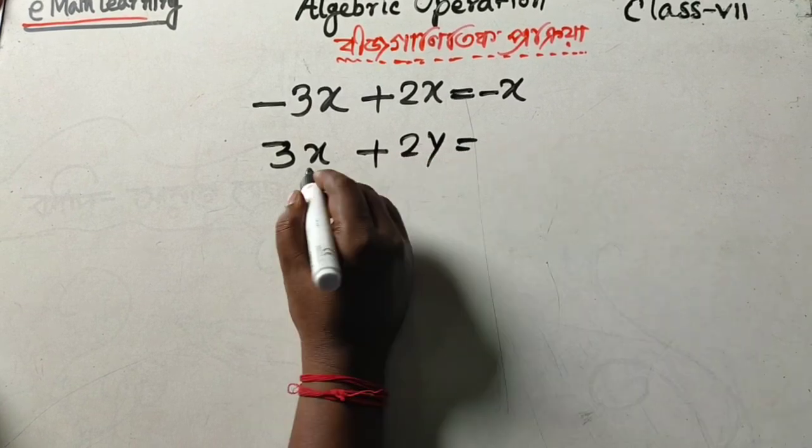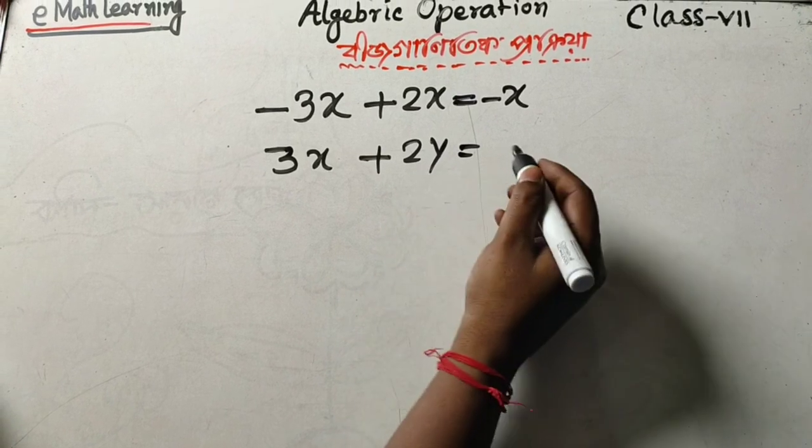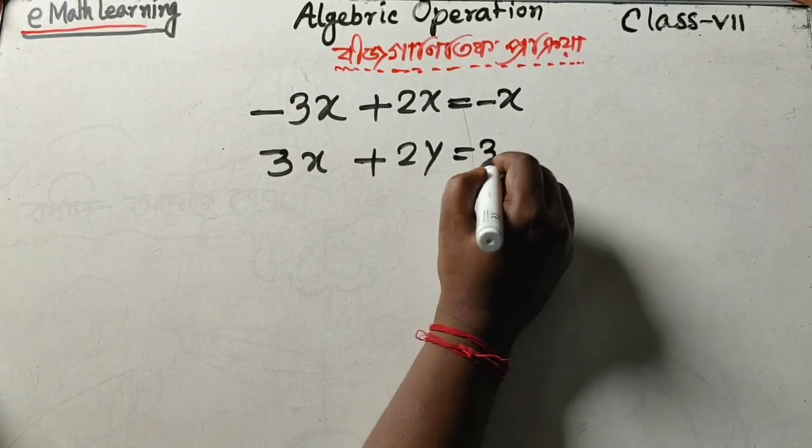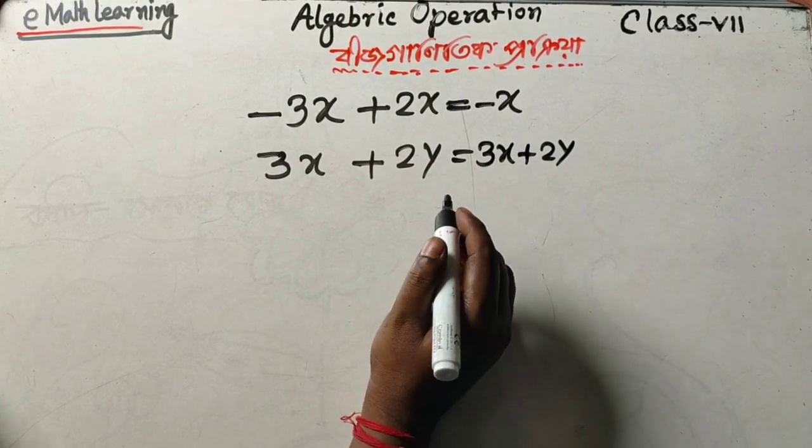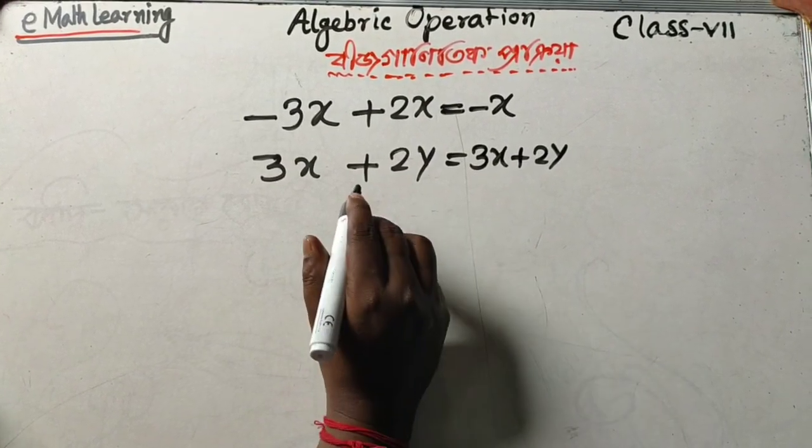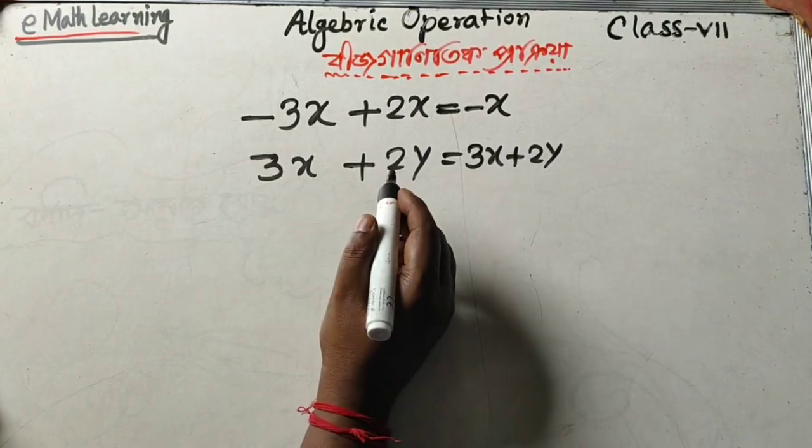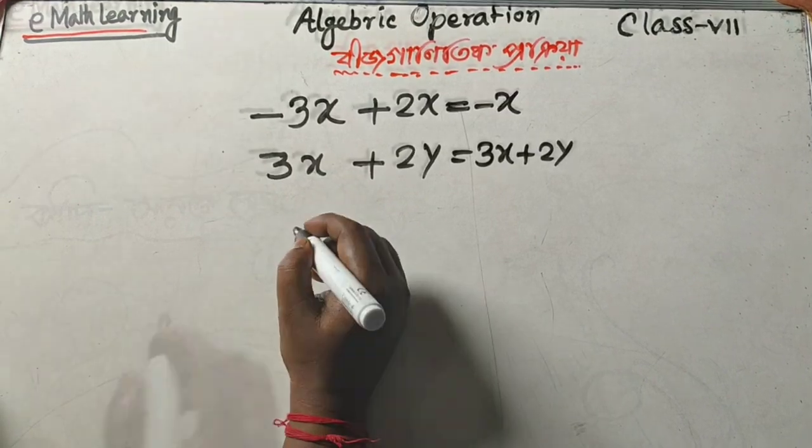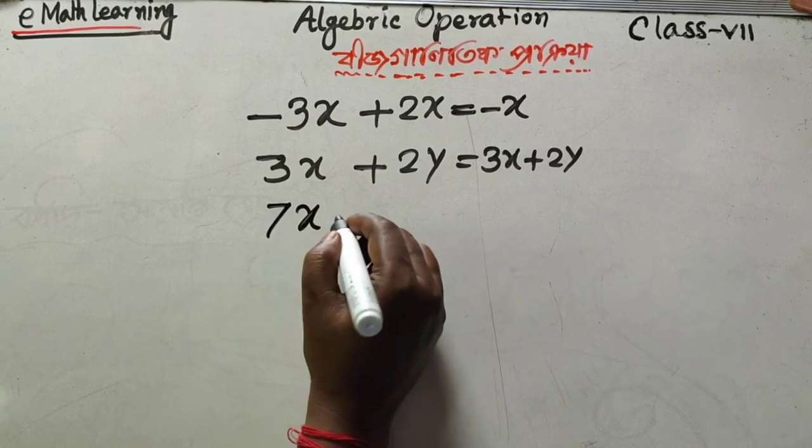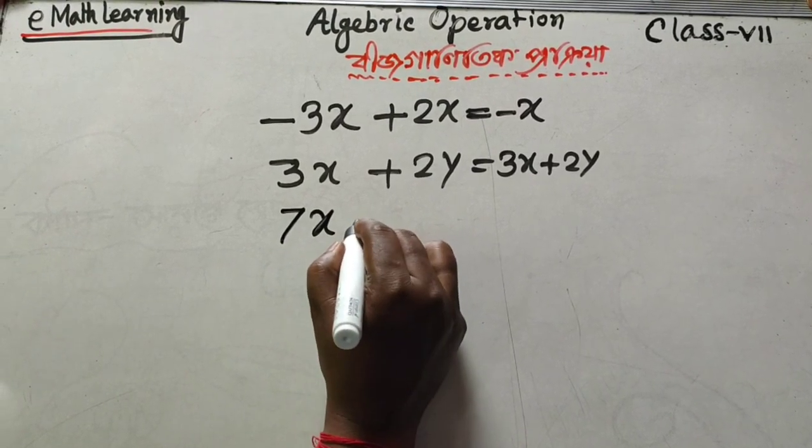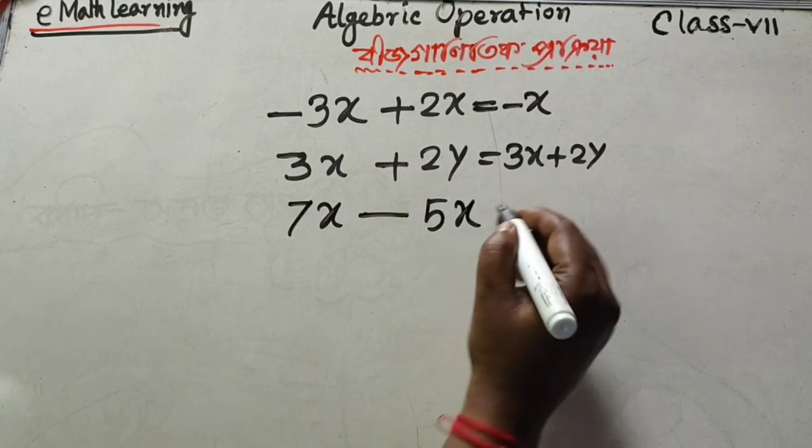We are not going to combine these terms because we can't consider them the same. We can't combine 3x and 2y because they are not like terms. It depends on the variables - they must be the same to combine them.